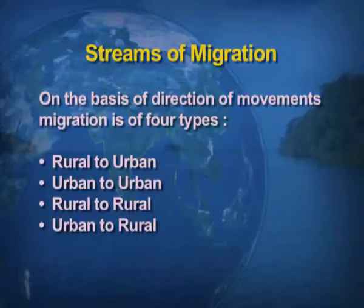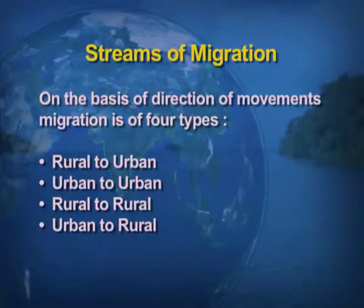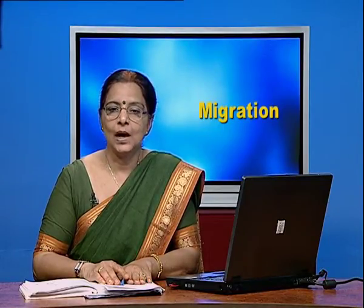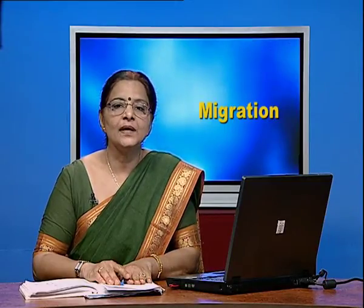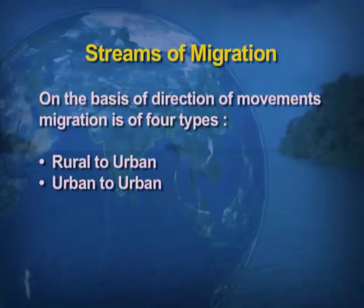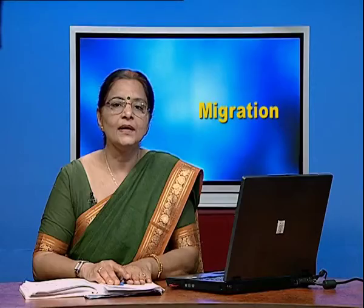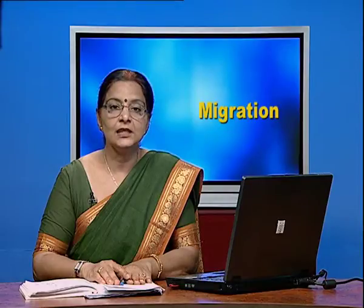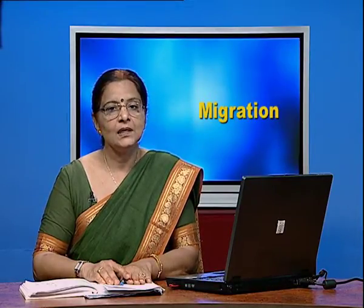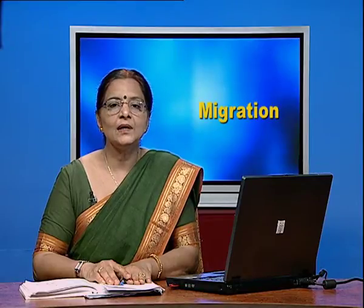A very interesting aspect of migration is the streams of migration. On the basis of the direction of movement, migration is of four types: one, when people migrate from rural area to urban area; two, migration from urban area to urban area; three, when people migrate from rural area to rural area; and four, migration from urban to rural areas, which is not very common in India.